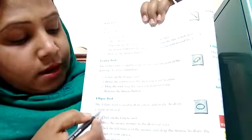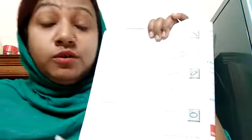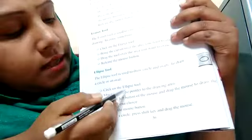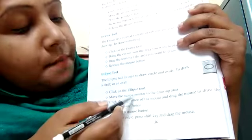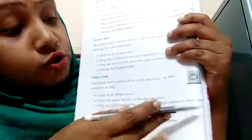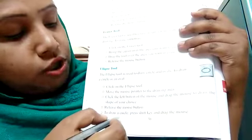Now we talk about the ellipse tool. The ellipse tool is used to draw circles and ovals. To use it: click on the ellipse tool, move the mouse pointer to the drawing area, click the left button of the mouse and drag to draw the shape of your choice, then release the mouse button. To draw a circle, press the Shift key and drag the mouse.